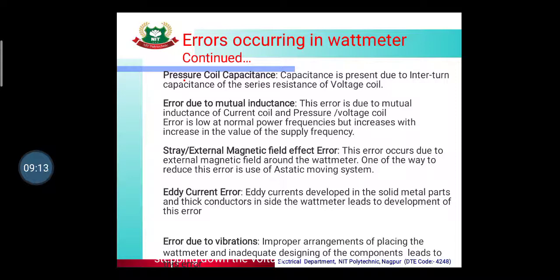There is also an error due to external magnetic field effects. Another error is the eddy current error, which develops in the solid metal parts and thick conductors used in the instrument. The last error is error due to vibration, caused by improper placement of the watt meter or inadequate design of components, which generates vibrations in the instrument.